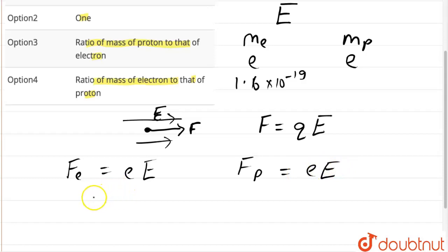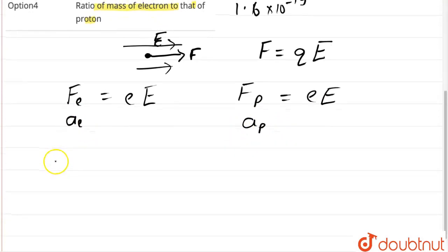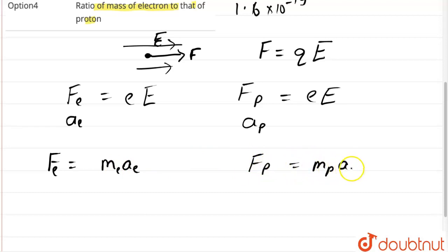Let us imagine the acceleration of electron be ae and acceleration of proton be ap. Also, we know from Newton's second law, F is equal to m into a. So for electron, force on electron would be mass of electron into acceleration of electron, and for proton, Fp is equal to mp into ap.